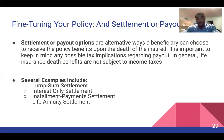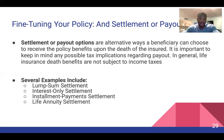Settlement or payout options are alternative ways a beneficiary can choose to receive policy benefits upon the death of the insured. It's important to keep in mind any possible tax implications regarding payout. In general, life insurance death benefits are not subject to income taxes. Examples of payout options include lump sum settlement, interest only settlement, installment payment settlement, and life annuity settlement.